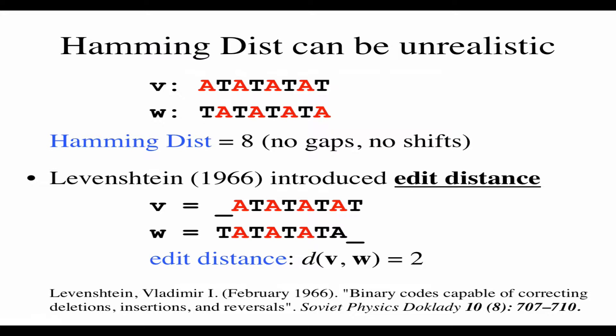Hamming distance can be unrealistic because if you have a gap, it shifts everything off and none of the letters match. So Levenshtein introduced something called edit distance, which adds the concept of a gap as a distance of one in the same way that having a base change is a distance. Illumina sequencing doesn't really insert much in the way of gaps, but there are other methods that do.